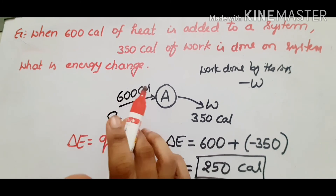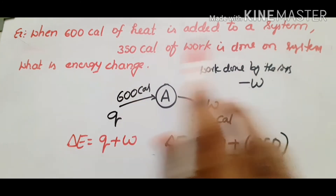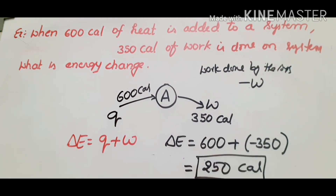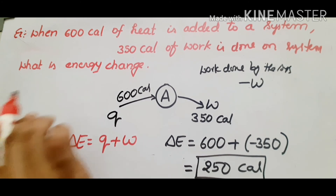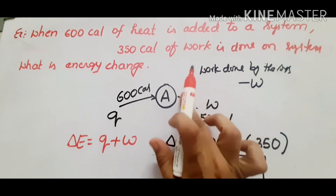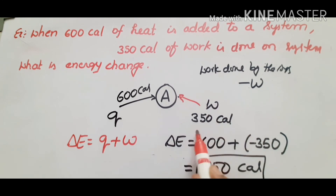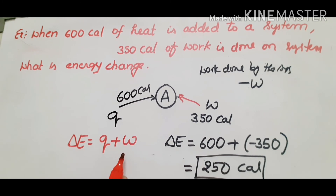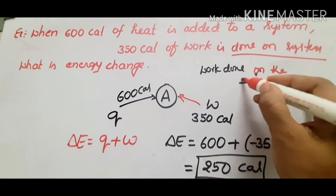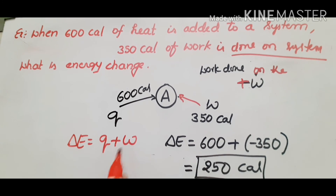If the problem is different: 600 calories of heat is added to the system, and 350 calories of work is done on the system. Since work is done on the system, W is positive. So delta E equals 600 plus 350 equals 950 calories.